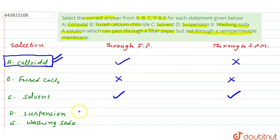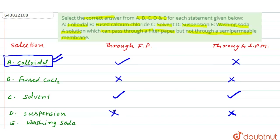For a suspension, the size of the dispersed particles is sufficiently large, so they cannot pass through a semi-permeable membrane or filter paper. The dispersed particle size in a suspension is large compared to the pore size of both the semi-permeable membrane and filter paper, so they cannot pass through either.